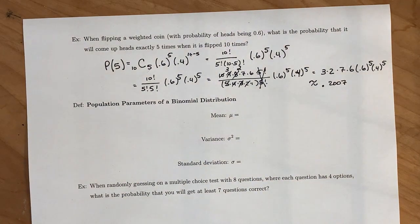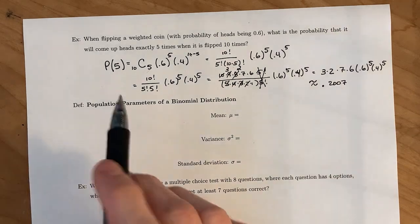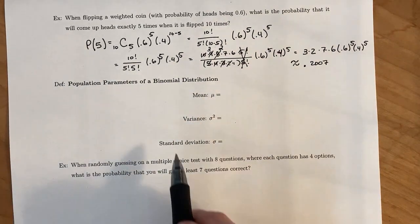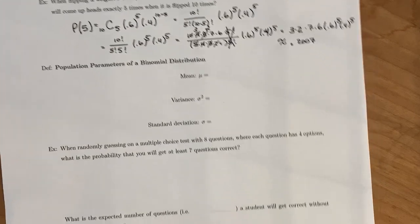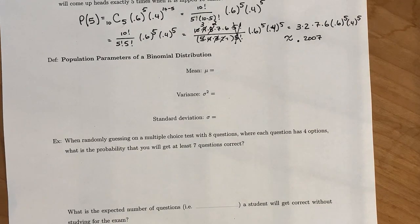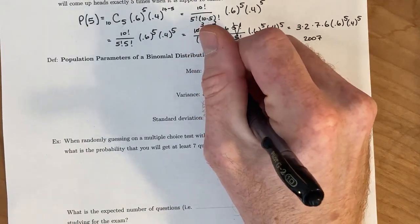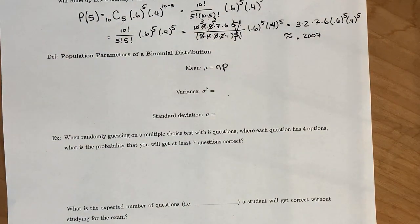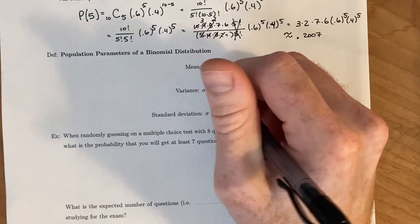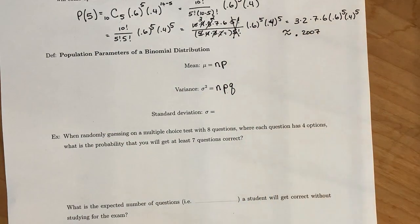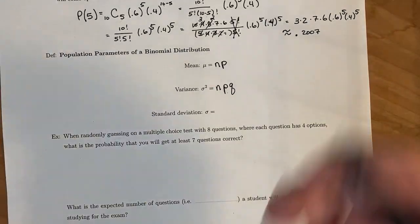And since these binomial distributions, if we were to do that for each one of the random variables, is an example of a discrete random variable or discrete probability distribution, we can talk about its mean, variance, and standard deviation. But since this is a very special type of probability distribution, there's very nice formulas for the mean. And so the mean is just going to be the number of trials times the probability of success. The variance is going to be the number of trials times the probability of success times the probability of failure.